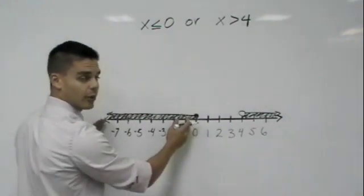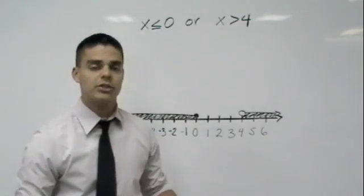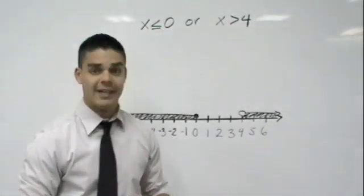So X can fall in this category or X can fall in this category. There's a disjunction. I can't even say it.